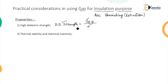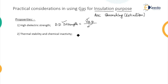The second property is that the gas should be thermally stable and chemically inactive. Whatever change in properties takes place, there should be no effect on the gas — it must remain stable or absorb heat during temperature changes. It should not participate in chemical reactions regardless of changes in parameters. If it is chemically inactive, we can say that gas is non-flammable.